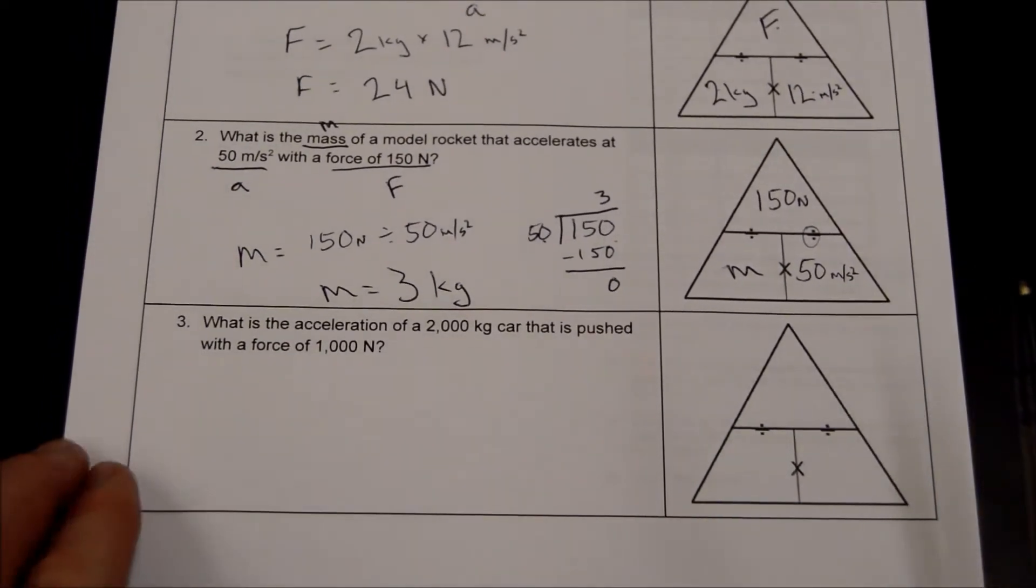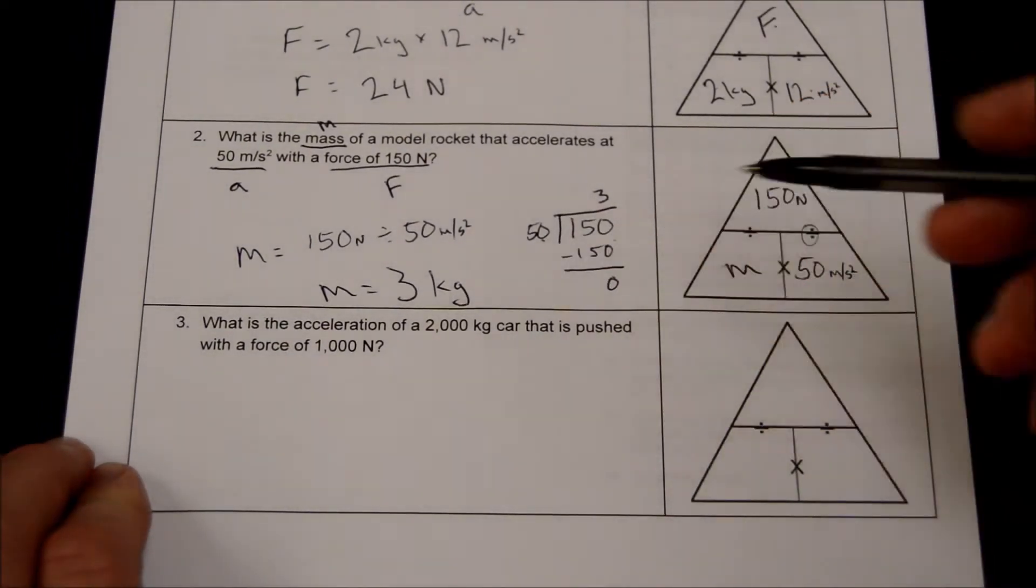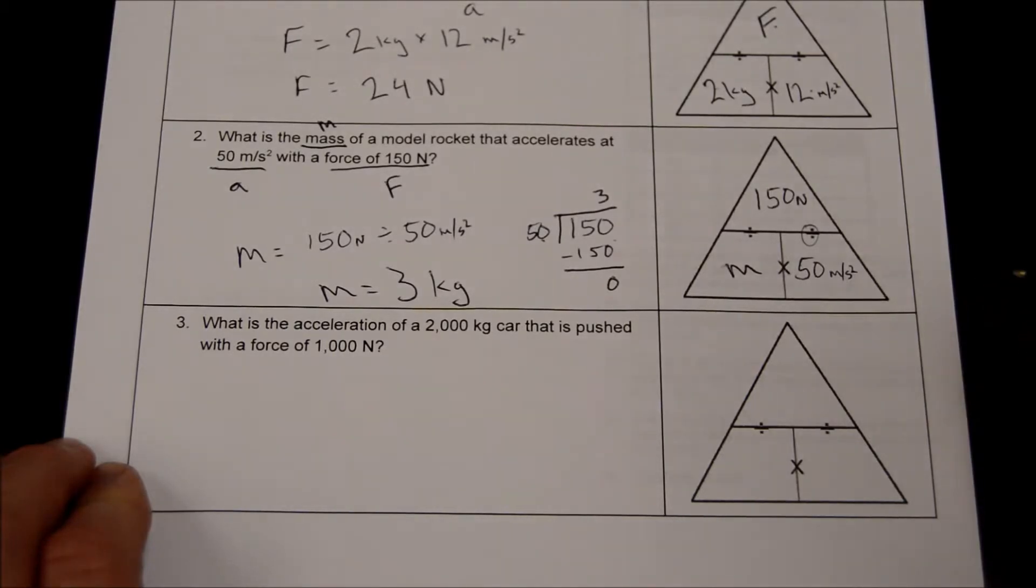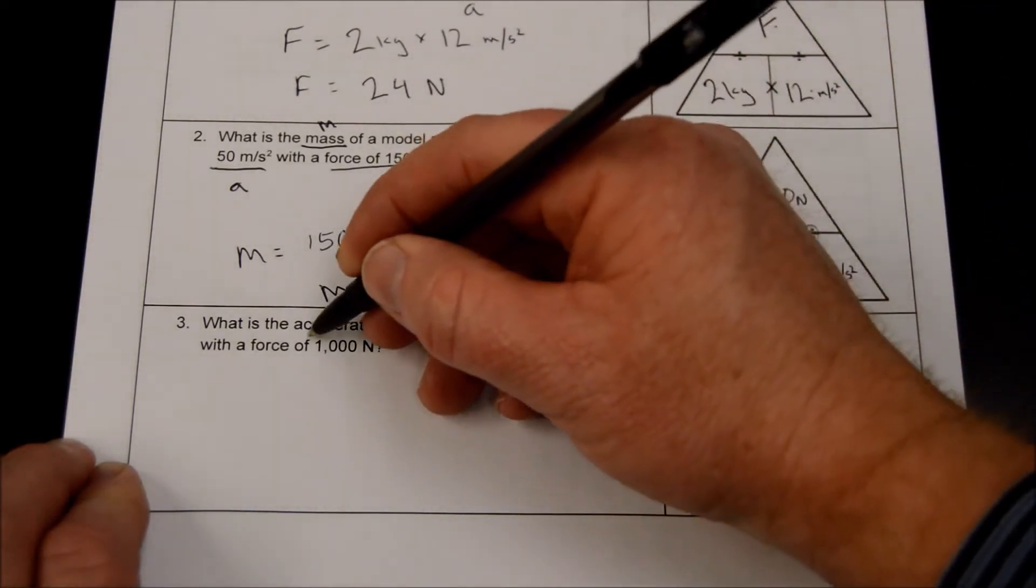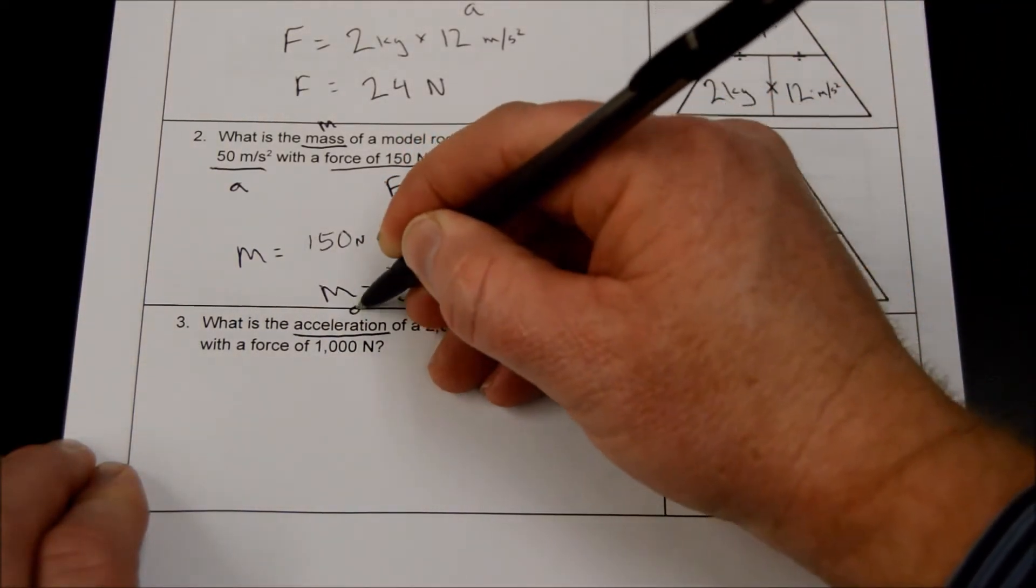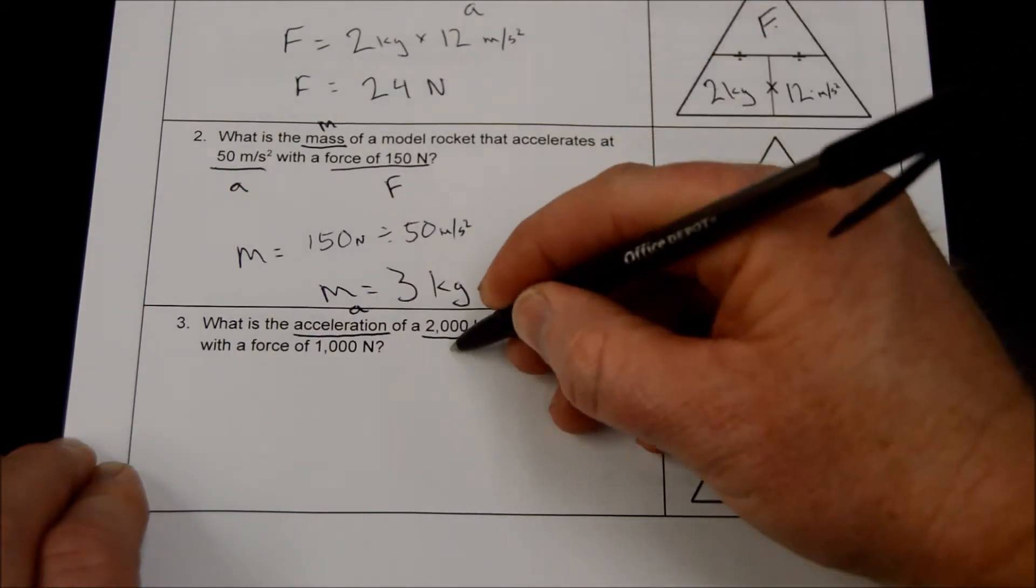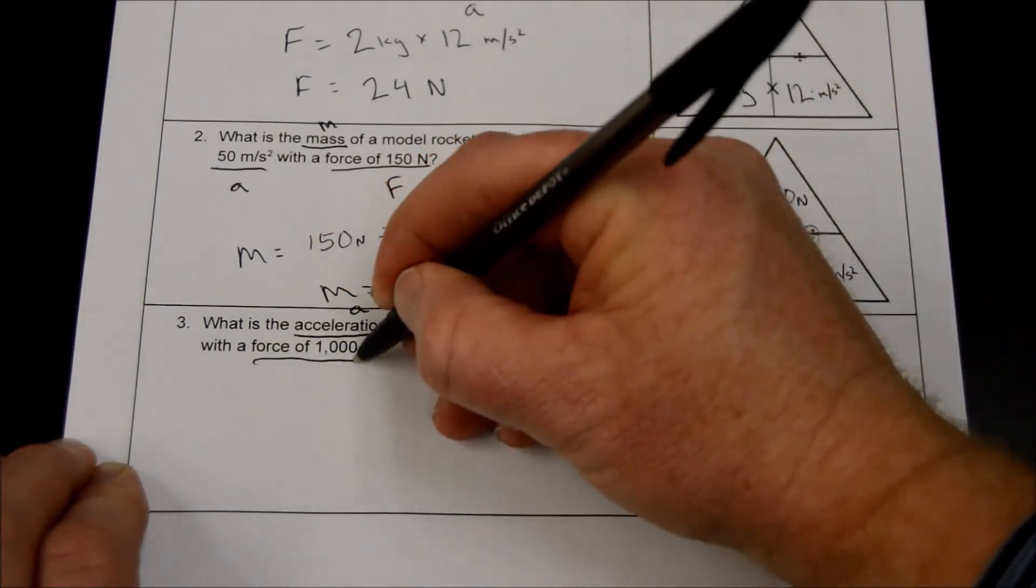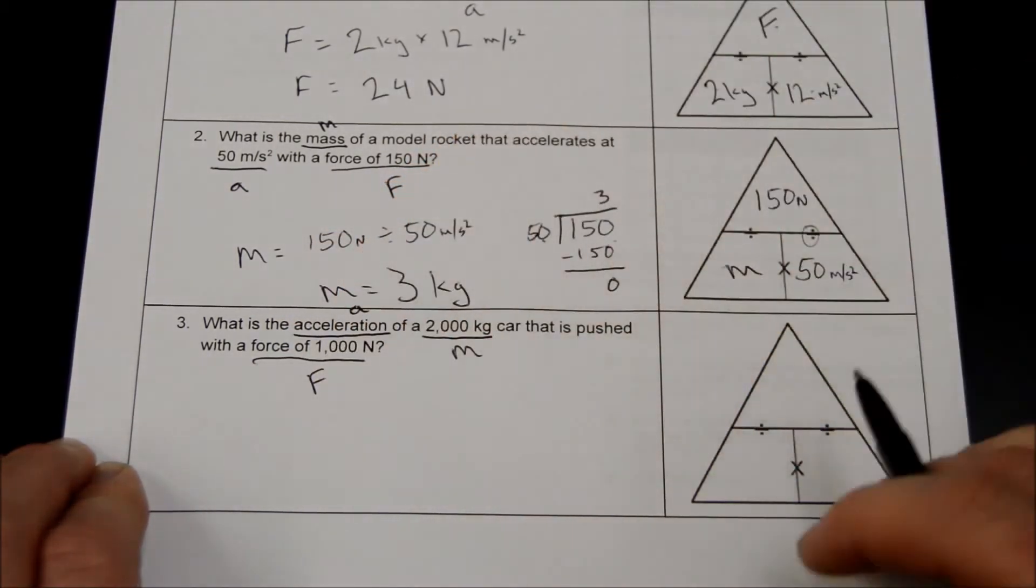Let's do our final one. What is the acceleration of a 2,000 kilogram car that is pushed with a force of 1,000 newtons? We don't know acceleration. That's A. 2,000 kilograms is our mass, and force F is 1,000.